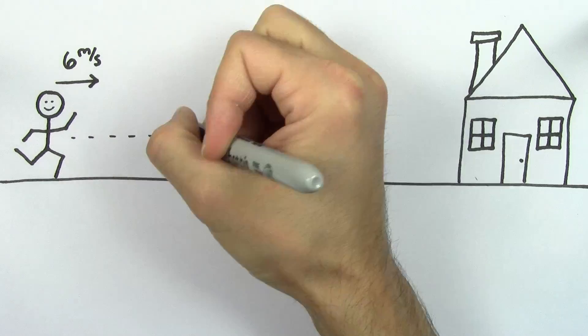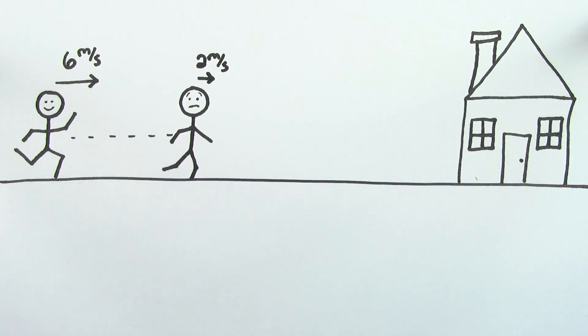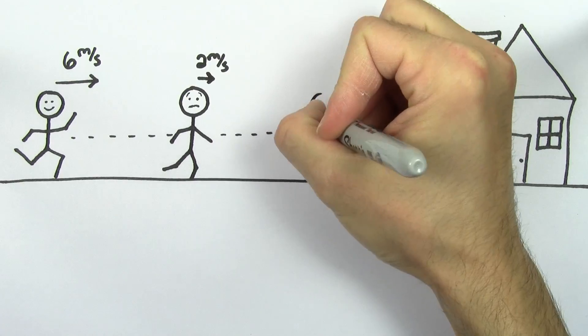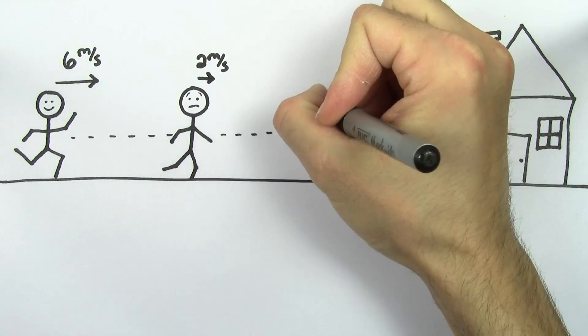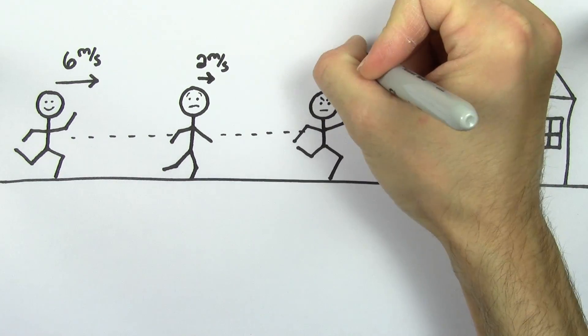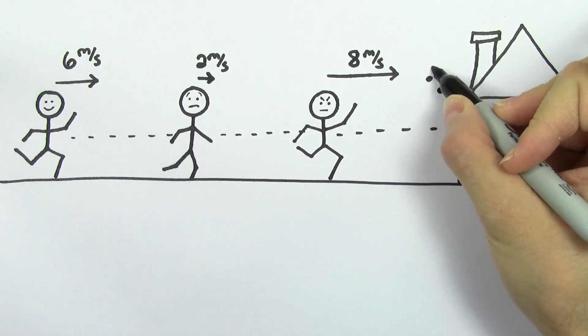You're pretty motivated to get home, so say you start running at 6 meters per second. Maybe it's been a while since the last time you ran, so you have to slow down a little bit to 2 meters per second. When you get a little closer to home, you say no. Captain Antares wouldn't give up, and I'm not giving up either, and you start running at 8 meters per second, and you make it home just in time for the opening music.